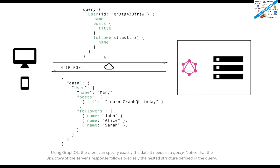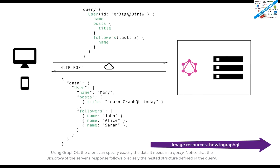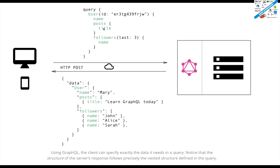So how exactly will GraphQL solve the problem? This is the GraphQL server, and this information is already available at the server side or maybe in your database. This is the query we will send — for this user ID, I want name, I want posts like how many titles are there for that particular post, and I want to check the last three latest followers and get their names. That's it. We will send a POST request to the GraphQL server.